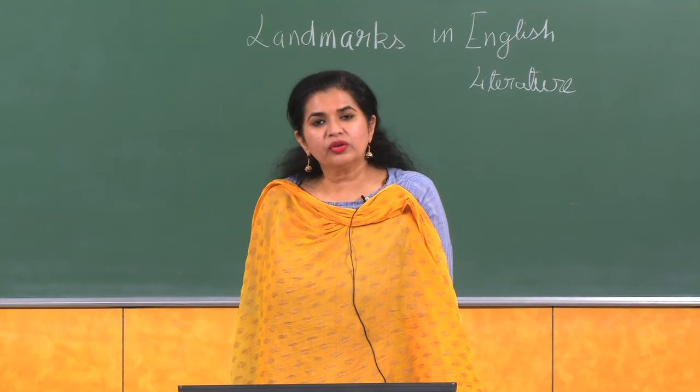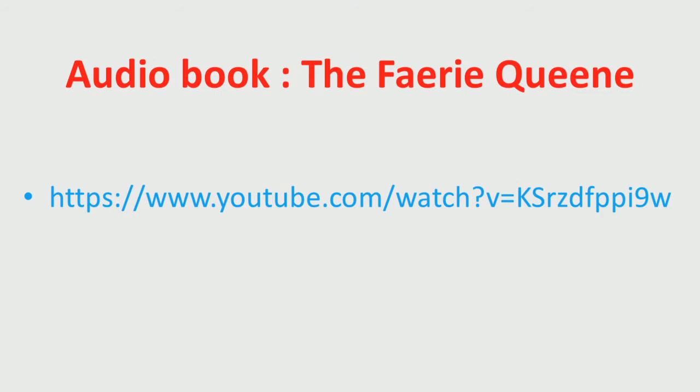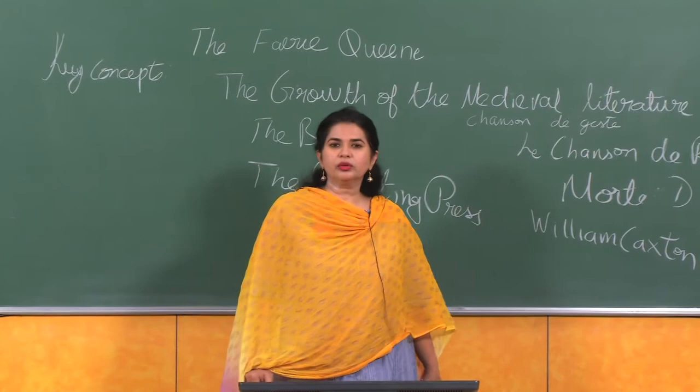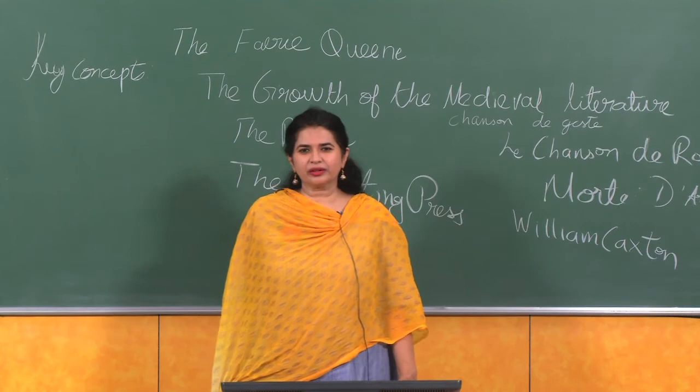Onomatopoeia is also common, as well as other types of sound effects, vowel sequences, devices of alliteration, assonance, and rhyme. You should know what onomatopoeia is — a word that imitates or suggests the source of the sound that it describes. Here is an excellent rendition of The Faerie Queene — look at the link here. From The Faerie Queene, let me take you to the growth of medieval literature, which precedes the Elizabethan period.